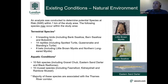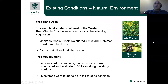From a natural environment perspective, we have completed our initial screening and investigations within the study area. The majority of species would be located within the Thames River corridor. We have the potential for nine breeding bird species, 14 reptiles, and nine bat species, as well as the potential for 10 fish and 10 mussel species within the project limits. For the woodland located southeast of the Western Road and Sarnia Road and Philip Aziz intersection, we have a number of trees including Manitoba maple, black walnut, wild mustard, and hackberry. The boulevard tree inventory and assessment identified 130 trees along the corridor, and most trees were found to be in good condition.